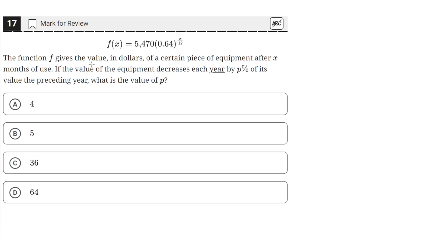The function f gives the value in dollars of a certain piece of equipment after x months of use. If the value of the equipment decreases each year by p% of its value the preceding year, what is the value of p?